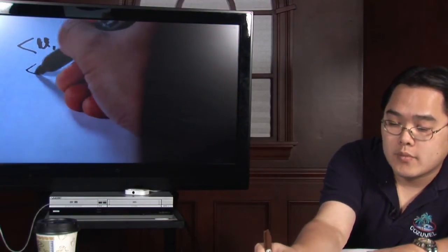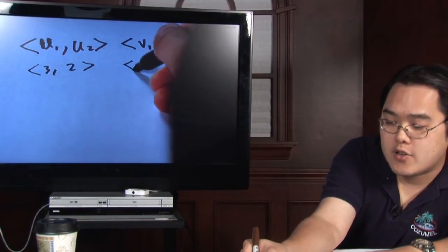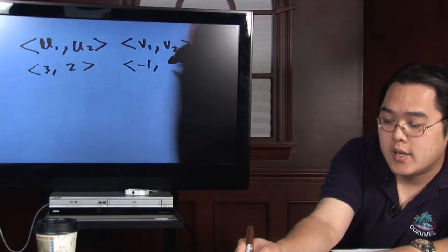Suppose you have <3, 2> and you have another vector, let's just say <-1, 5>.